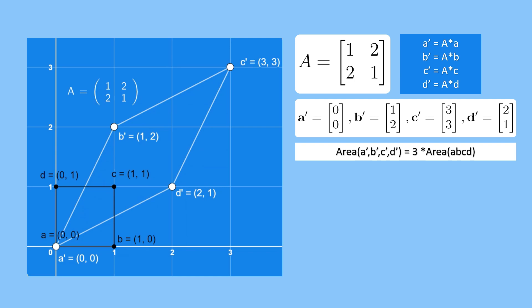Additionally, if you trace the vertices starting from a to b to c and to d in the original square, the trace goes counterclockwise. However, after the transformation, tracing the vertices of the parallelogram from a' to b' to c' to d' proceeds in a clockwise direction.